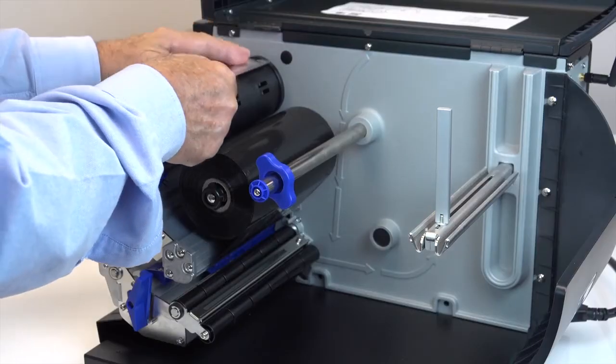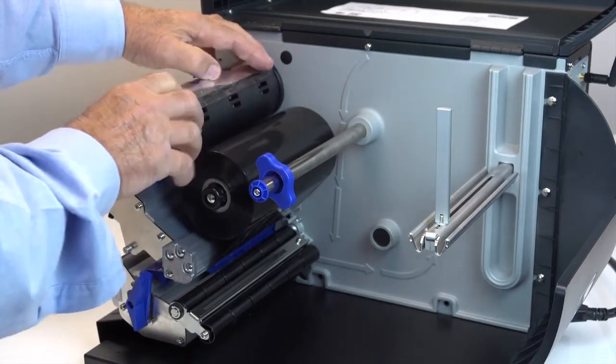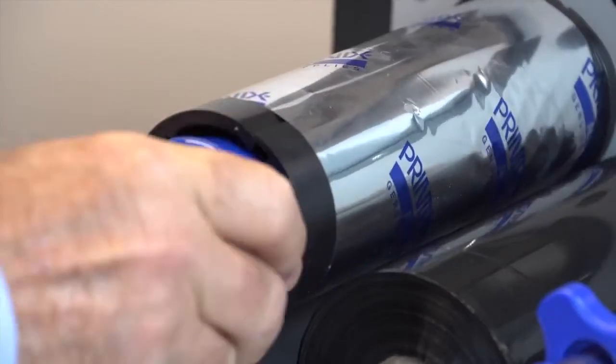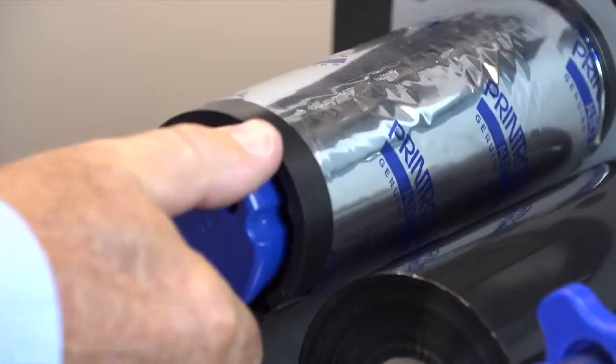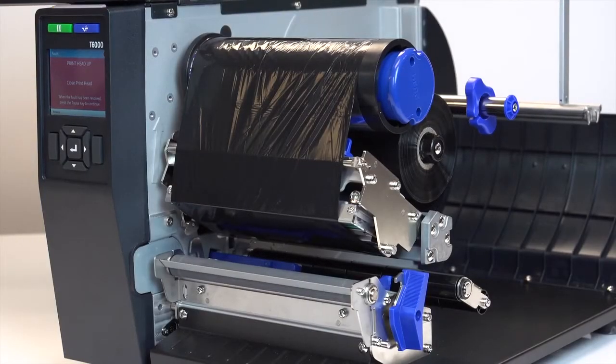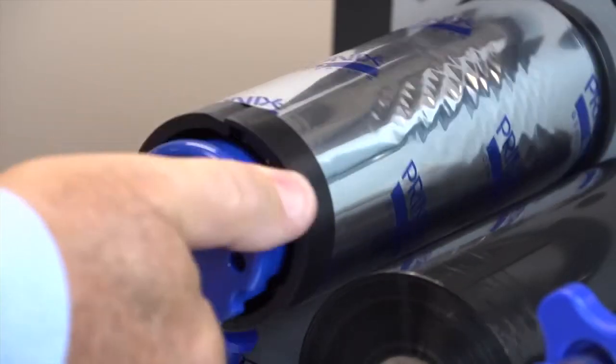Place the ribbon against the flange of the ribbon take-up spindle. Manually rotate the spindle clockwise until the leader has passed the print head. Continue to rotate the take-up reel a few times until the ribbon tightens without slipping.